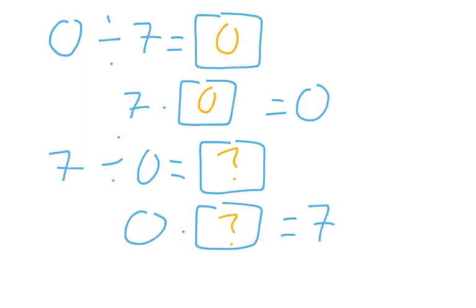And so that is why we always say that division by 0 is undefined.